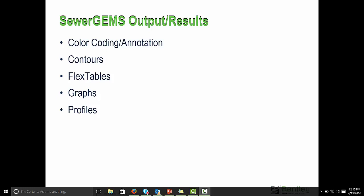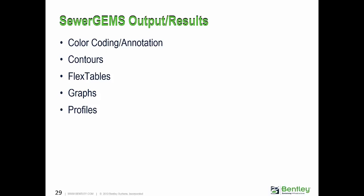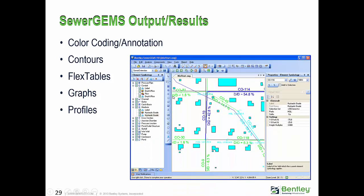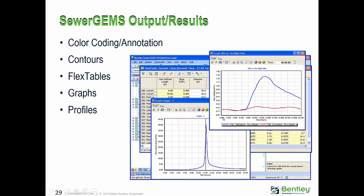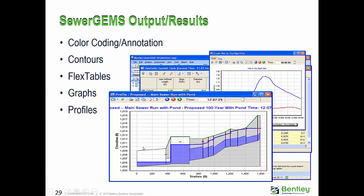After computing the network, you can view results and outputs from SewerGEMS by color-coding the network, annotating it for properties like the d/D ratio, conduit label, conduit size, conduit length, and manhole HGL, invert level, or ground level. You can create flex tables to get all results in tabular format, generate graphs for storm events or flow in conduits, compare graphs for a particular element across various scenarios, and create network profiles.